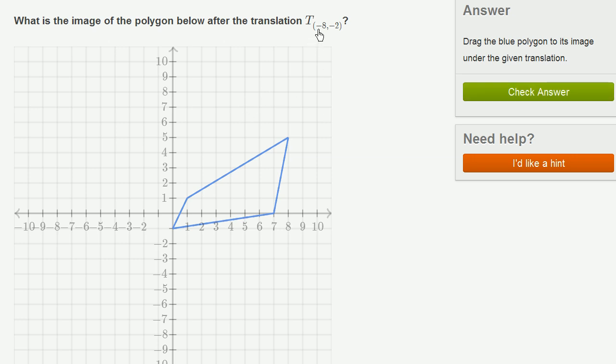So here we need to shift it by negative 8 in the horizontal direction. So this one right over here, its x value is 0. So we need to go essentially negative 8. Negative 1, negative 2, or we'll move to the left.